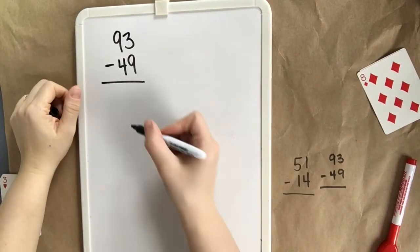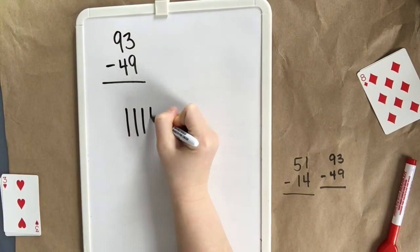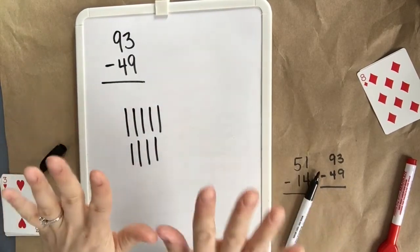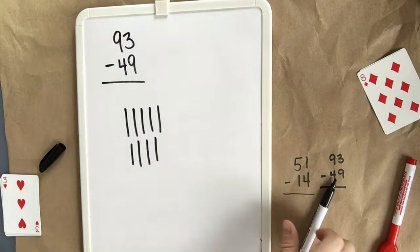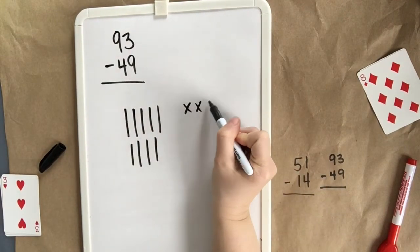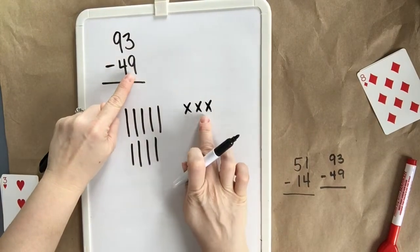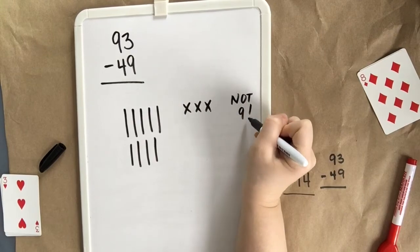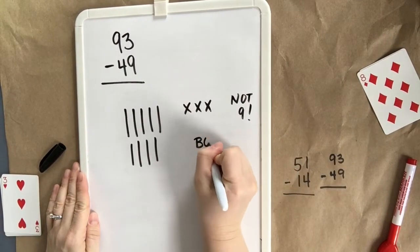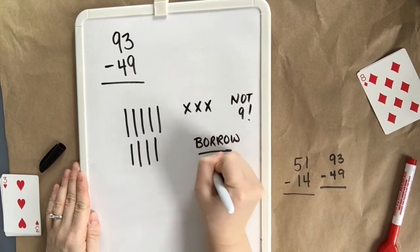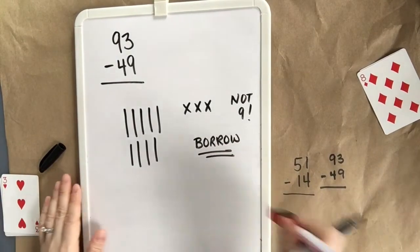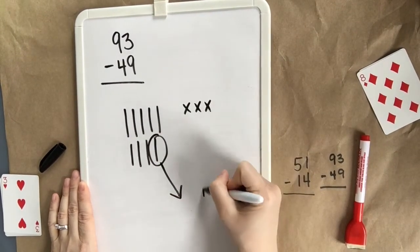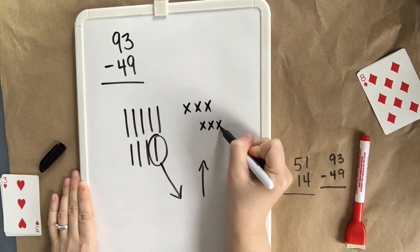Let's try this in a different way. This time with base 10 blocks. 10, 20, 30, 40, 50, 60, 70, 80, 90 and 3. 93. We can't take 9 away from 3. There aren't 9 there. So we're going to have to borrow from our neighbor. Head over and take away a rod of 10. And you're going to replace that with 10 ones.